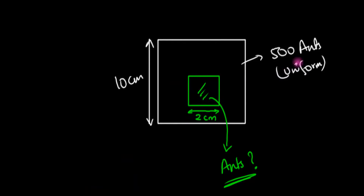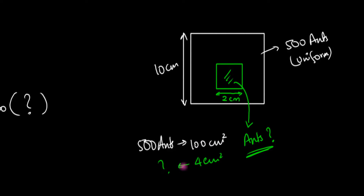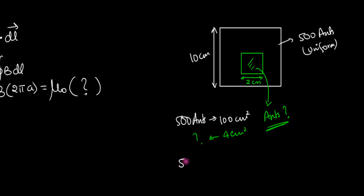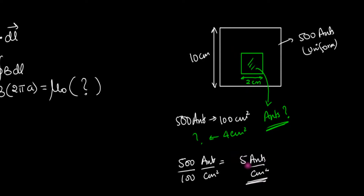So let's see what the answer turns out to be. There are 500 ants occupying an area of 10 times 10 — 100 centimeters squared. But we are asked in a small area of 2 times 2 — 4 centimeters squared. We can calculate per centimeter squared how many ants are present: 500 ants in 100 centimeters squared means 500 divided by 100, which is 5 ants per centimeter squared. With uniform distribution, every small square of 1 centimeter actually contains 5 ants. So for 4 centimeters squared, I multiply by 4 — that's 20 ants.